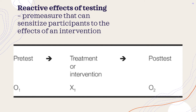The first threat to the external validity is called reactive effects of testing, where a pre-measure can sensitize participants to the aims of an intervention. What does that mean?